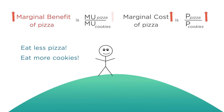Looking at the marginal benefit as the ratio of marginal utilities, we see that shifting from pizza to cookies leads the numerator — the marginal utility of pizza — to rise, while the denominator — the marginal utility of cookies — falls, so that the overall ratio rises. The marginal benefit of pizza is rising to match its higher marginal cost.